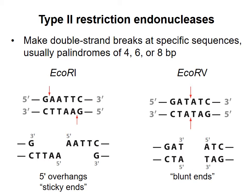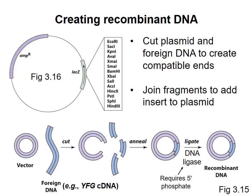The discovery of restriction endonucleases was a huge jump forward for our ability to manipulate DNA. We have now discovered thousands of restriction enzymes that recognize over 200 distinct sequences, and this allows us to cut and paste DNA fragments together with great precision. Most plasmids used for cloning have been engineered to contain a multiple cloning site with many restriction endonuclease recognition sequences that enable us to cut open the circular DNA. We can then paste in an exogenous or foreign DNA that has compatible ends.